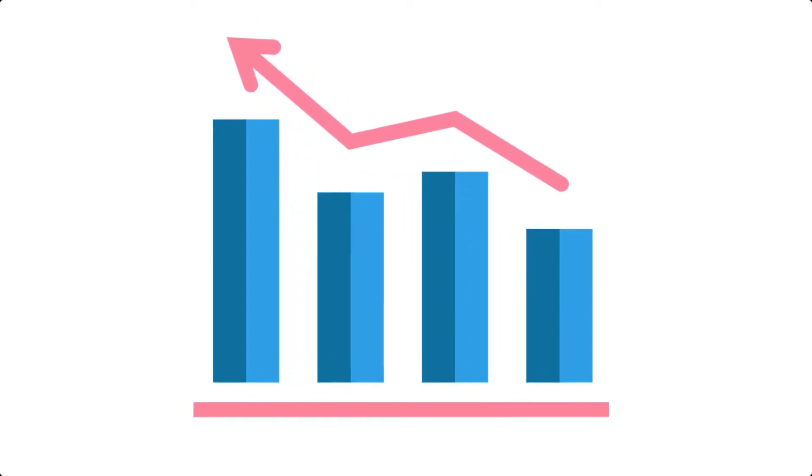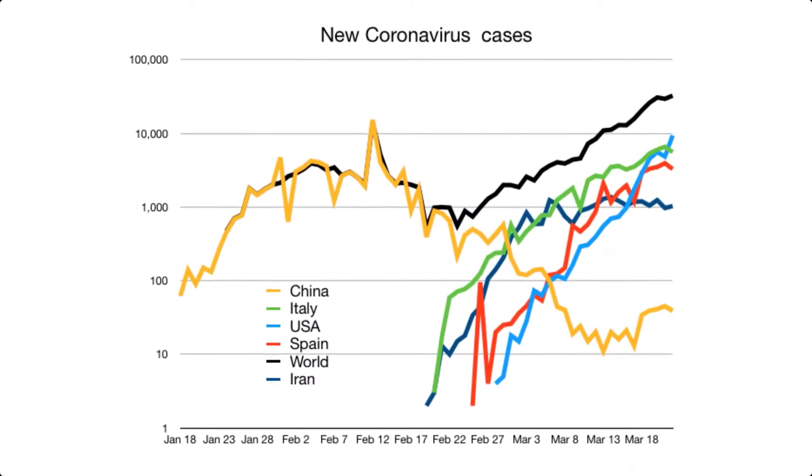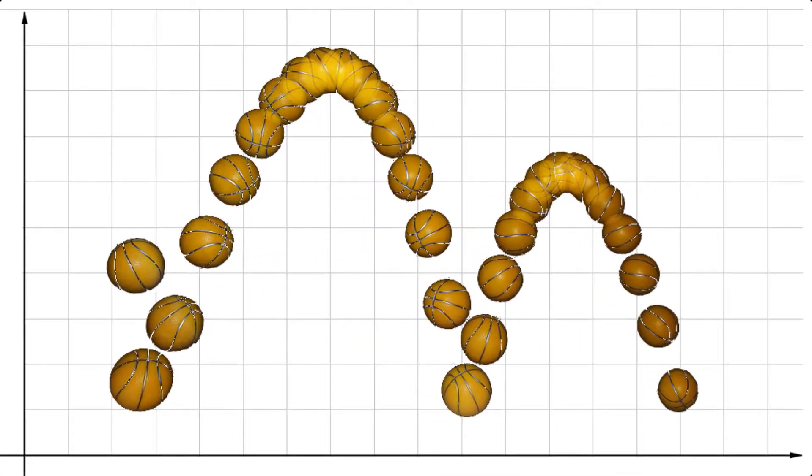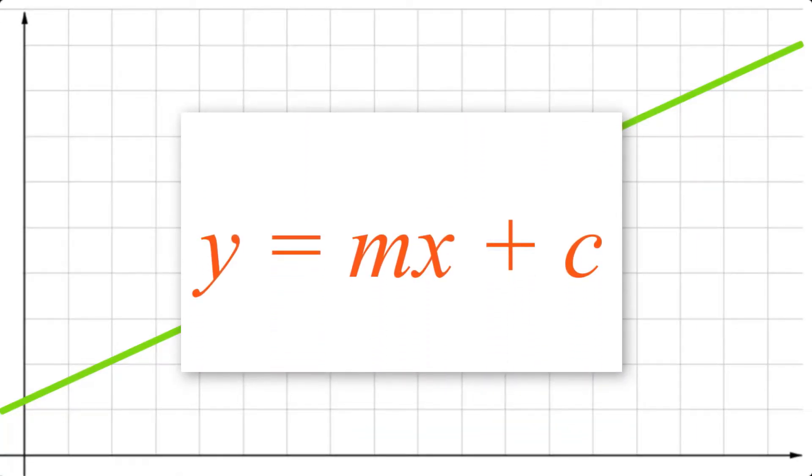Graphs help us to see information. They can help us predict costs in a business, model how viruses spread, or show the path of a flying object. The simplest form of a graph is a straight line because all we need to plot it are two points. But that's not the only way we can tell how a graph will look. We can also use the equation of the line, and that's just really like a rule that all the points on the line obey.